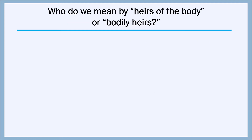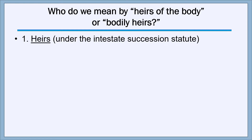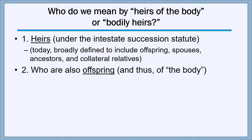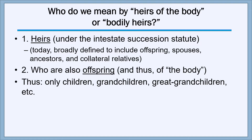We need to think about what 'heirs of the body' or 'bodily heirs' really means. An heir is a person who, under the intestate succession statute of a particular state, is entitled to receive a decedent's property if the decedent dies without a will. At common law, heirs were very narrowly defined to include only the offspring of the decedent, but today they're much more broadly defined to include not only offspring but potentially your spouse, your ancestors, and collateral relatives as well. However, when we say 'heirs of the body,' we're narrowing the definition even today to include only the offspring — meaning only children, grandchildren, and great-grandchildren could be heirs of the body.